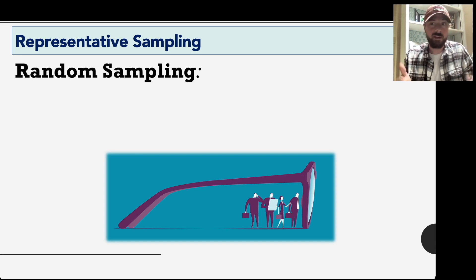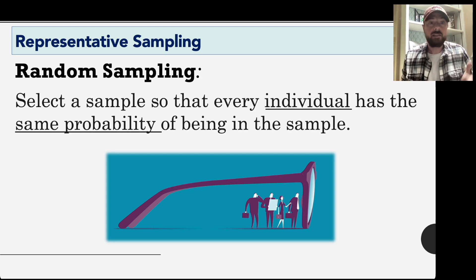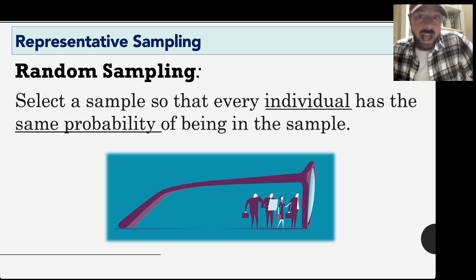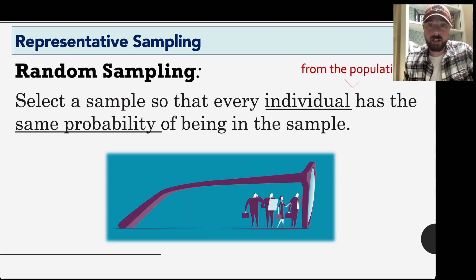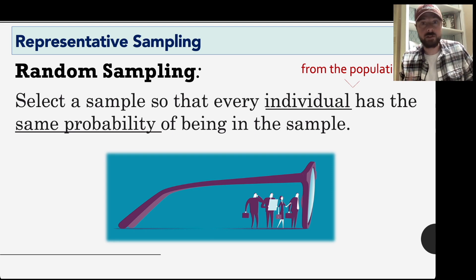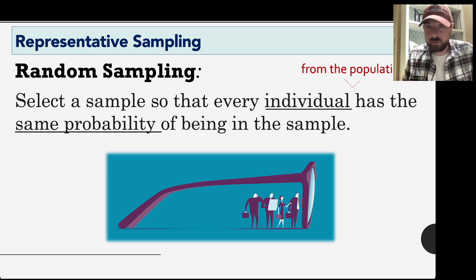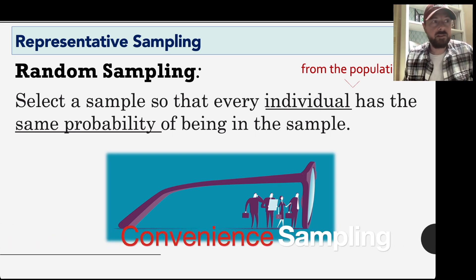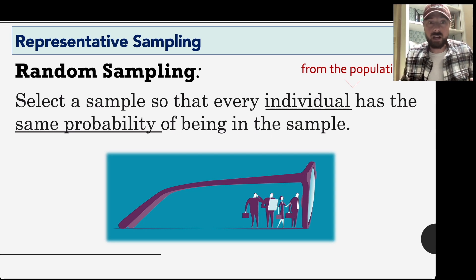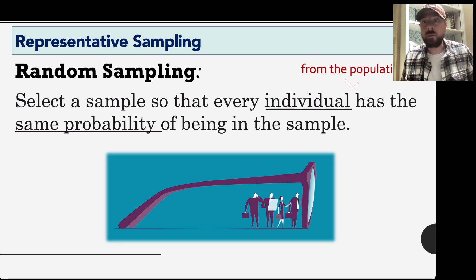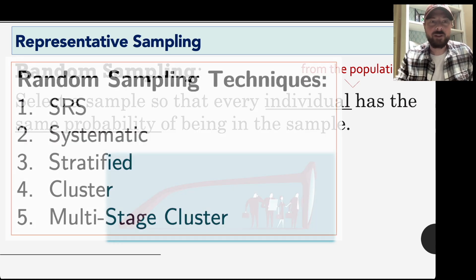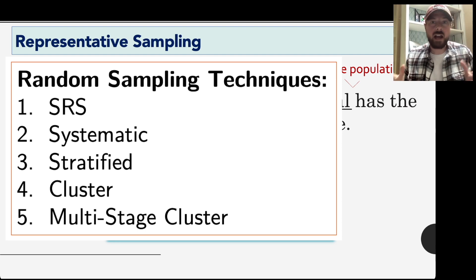So what is random sampling? In essence, the idea is very simple. It's where we select a sample so that every individual in that population has the same probability of being in the sample — so that no one has a higher or lower chance of being selected. For instance, in convenience sampling, it's not random because the people easiest to obtain are most likely to be selected, while those difficult to obtain will be least likely. Today we're going to talk about four or five random sampling techniques.